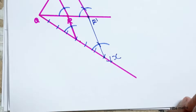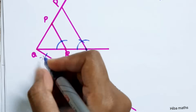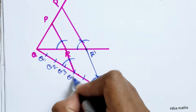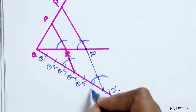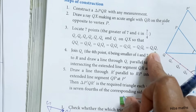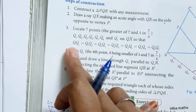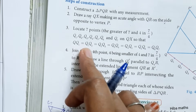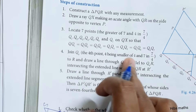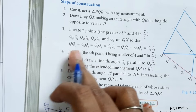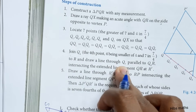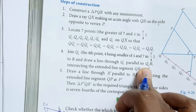We can mark Q1, Q2, Q3, Q4, Q5, Q6, Q7 — all equal divisions. We drop a line and join Q4. That is the 4th point. We drop a line to R, and draw a line through Q7 parallel to Q4R.